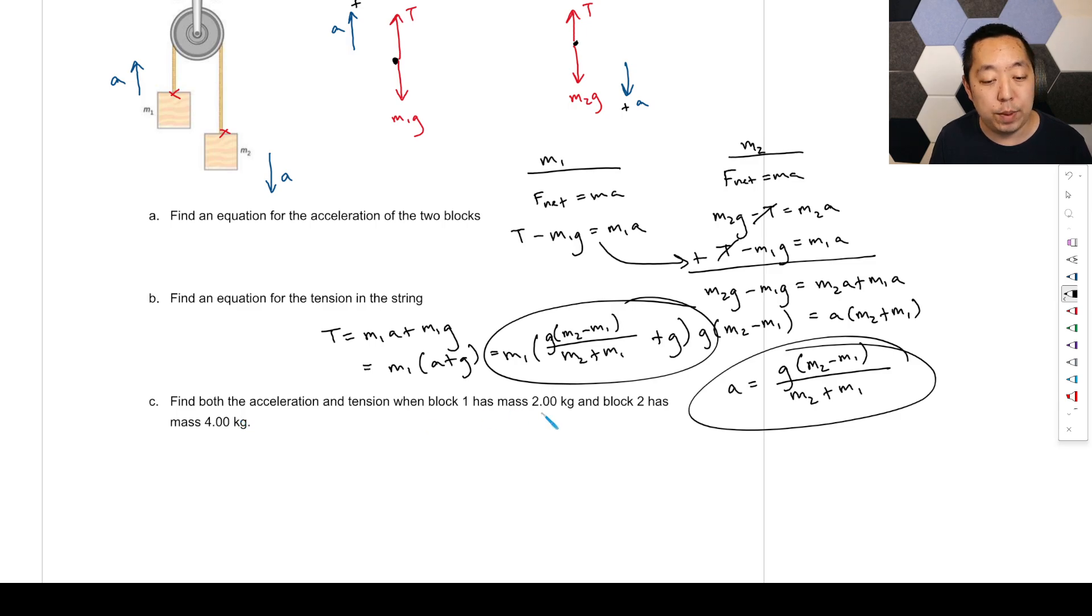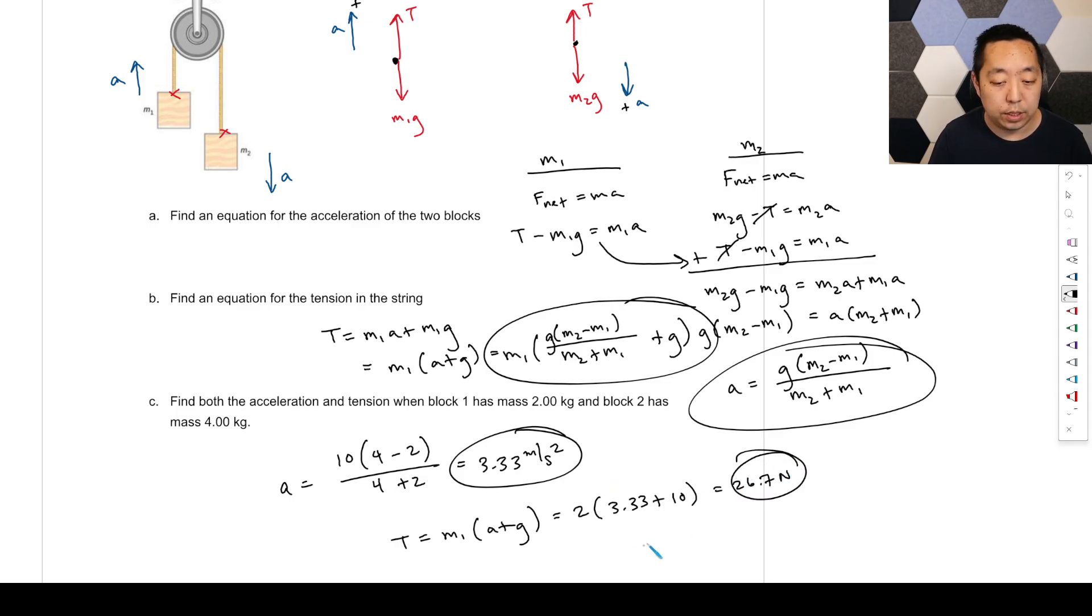Find the acceleration tension when block one has a mass of two kilograms and block two has a mass of four kilograms. This is just plugging in numbers at this point, which is a really good exercise. So G is, we'll say G is 10. M2 is four minus two divided by four plus two. So that's going to be two over six, 20 over six, which is going to be 3.33 meters per second squared. Then the tension is going to be M1A plus G. You could plug into this formula or you could just say like, it's two times 3.33 plus 10. You can use 9.8 if you want. It doesn't really matter. In AP physics, you are allowed to use either assumption. And that gives you 26.7 newtons like that.